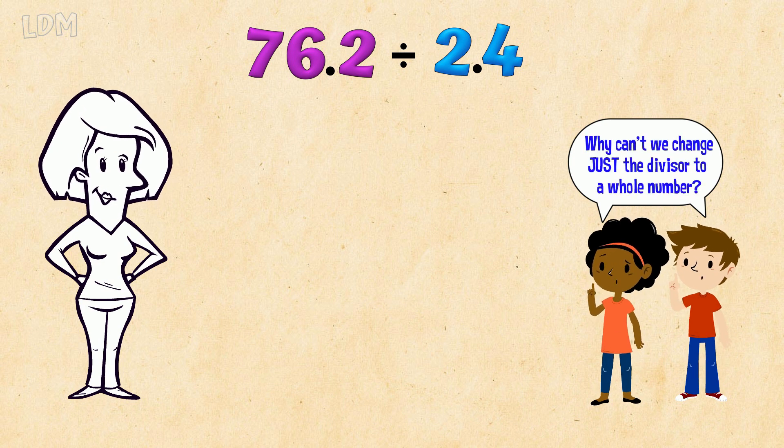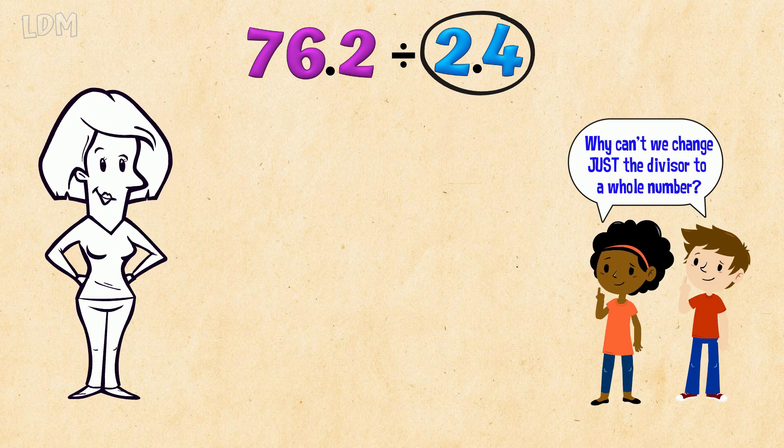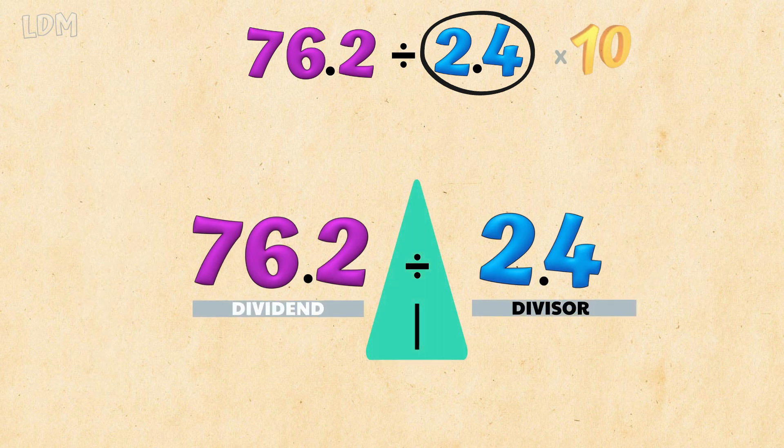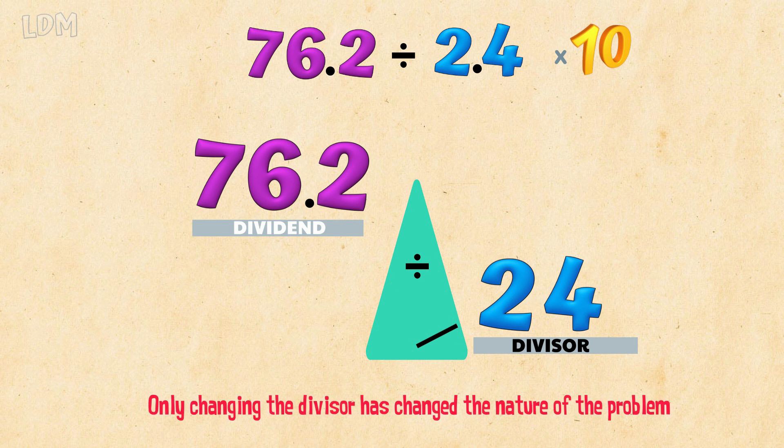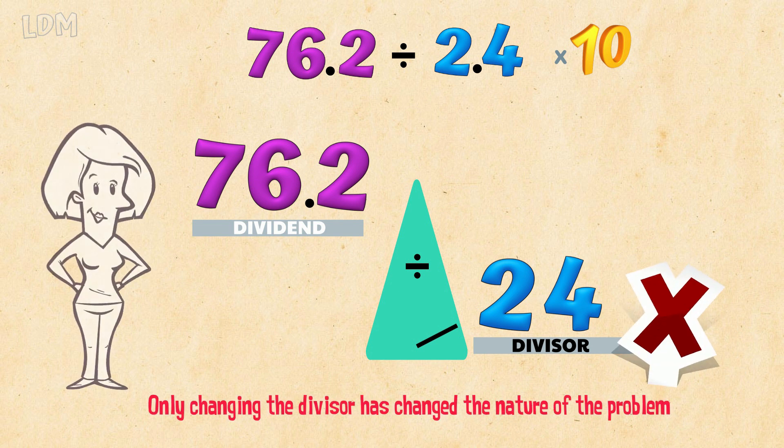Why can't we change just the divisor to a whole number? If you only change the divisor, you mess with the relationship between the numbers. We change the nature of the problem and then you get it wrong!